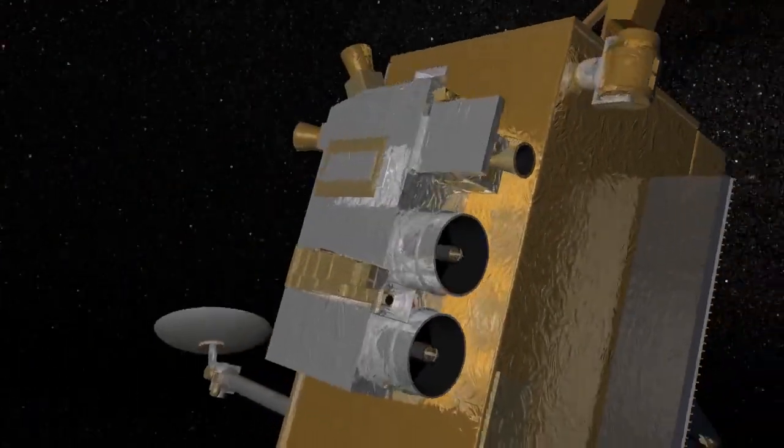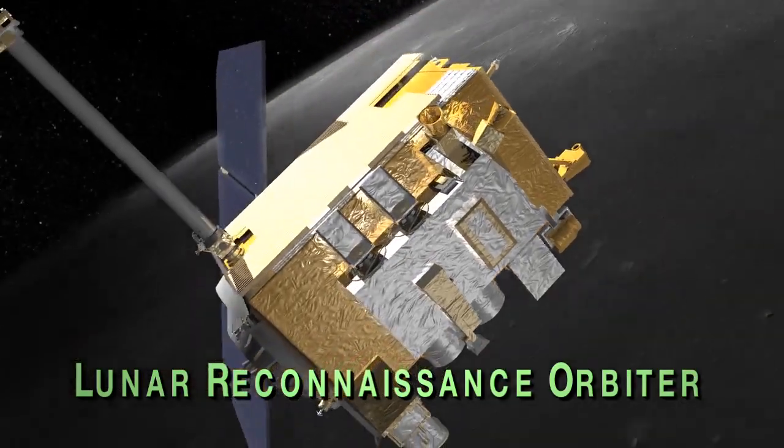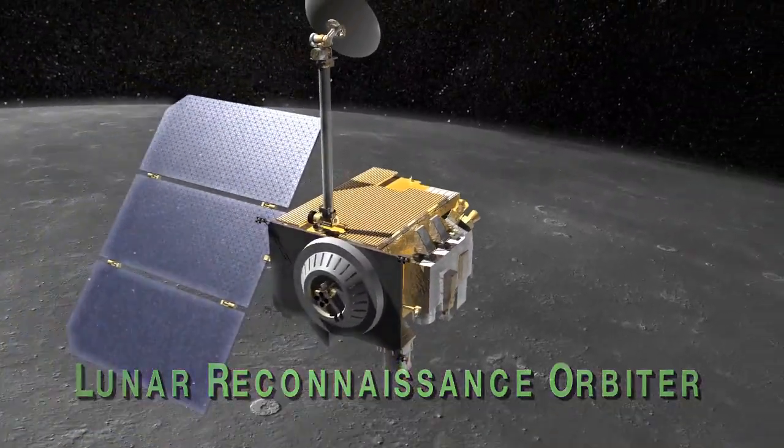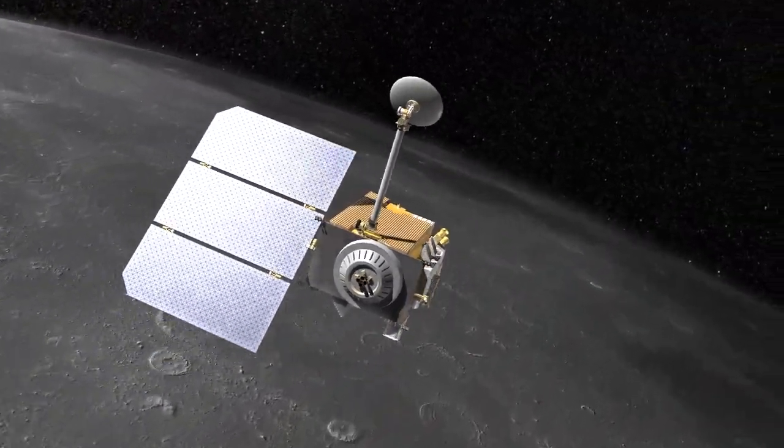For those that don't know, LRO is the Lunar Reconnaissance Orbiter. It's a NASA spacecraft that's been orbiting the moon since June of 2009, taking high-resolution pictures of the surface.